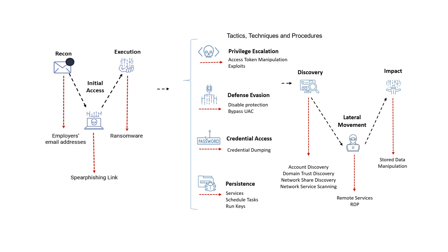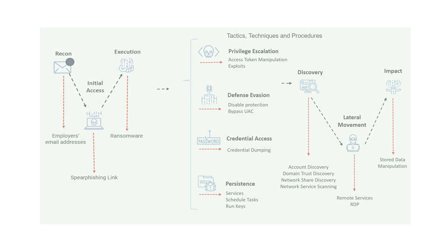The goal of the attacker is to discover assets, move laterally within the network, and cause significant impact to the organization. Bitdefender Security Technologies analyze and intercept ransomware execution at several stages to prevent it from encrypting personal or sensitive data.